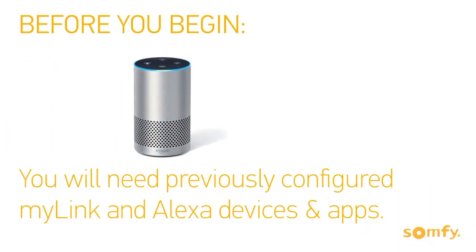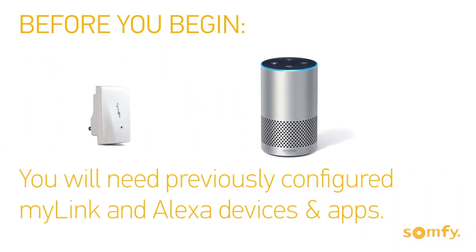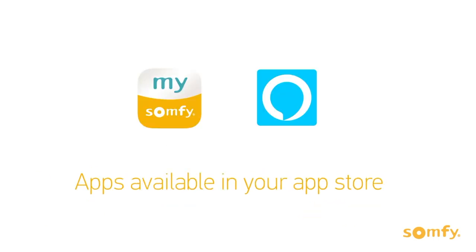Before you begin, you will need a previously configured and operational MyLink — the device and app — as well as an Amazon Alexa device and app. Both apps are available from your app store.